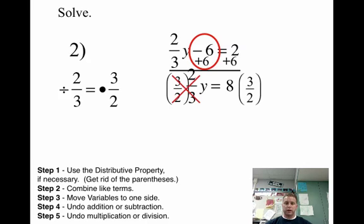On the left side, they basically cross-cancel out and give us a big fat 1 there. And that will leave us y. And 8 times 3 is 24. And the bottom will stay 2. So we get 24 over 2. 24 divided by 2 is 12.